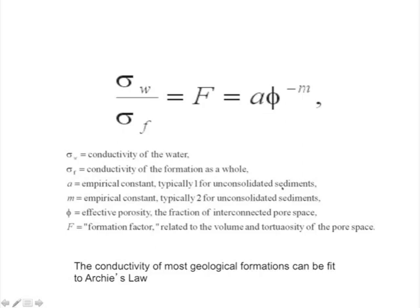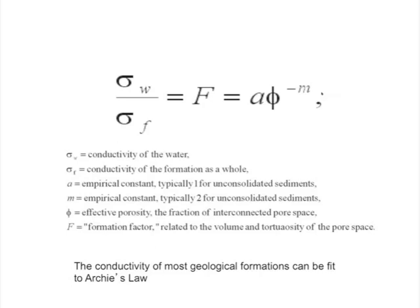If we ignore the S to the power of minus n — for instance if we have all water and no air or oil, as below the water table in most places — the formation factor simplifies to just 'a' times phi to the power of minus m. For unconsolidated granular sediments, 'a' might be one and the tortuosity m is typically two. So without air, gas, or oil, we have a pretty simple formation factor that depends entirely on the porosity.